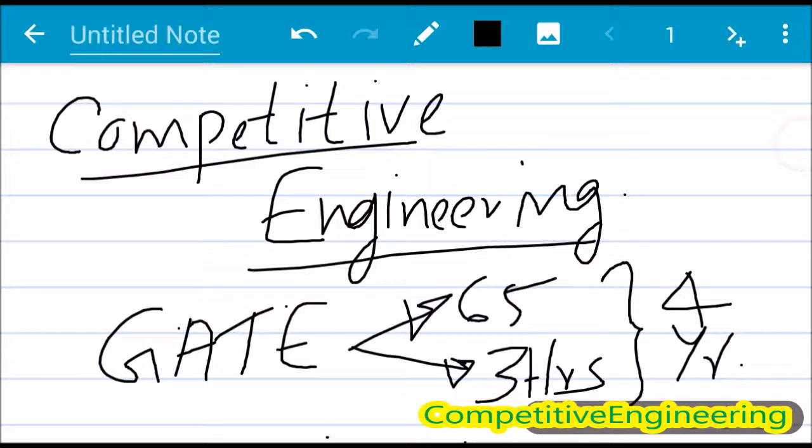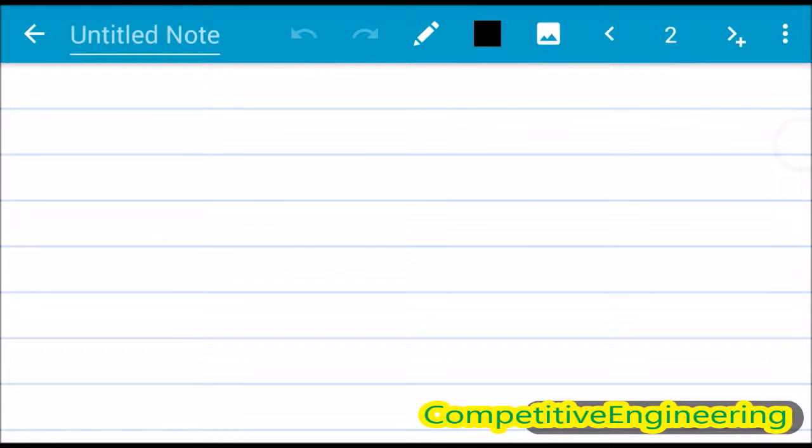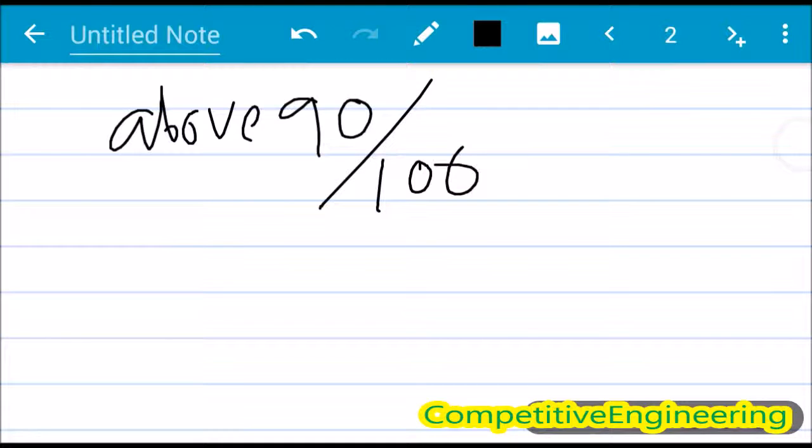So we started discussing on this. During that time, one person from our group said that if it is a very tough exam, then how are people getting above 90 marks out of 100? He has to attend above 60 questions out of 65 to get this mark.